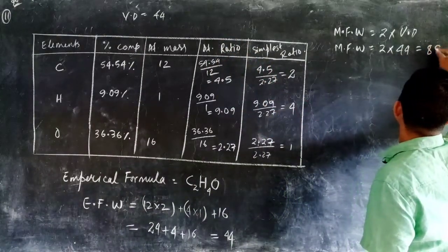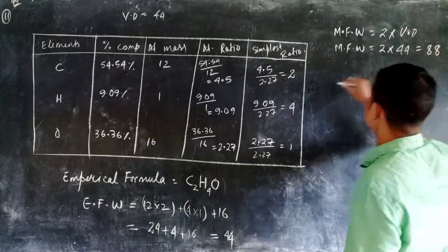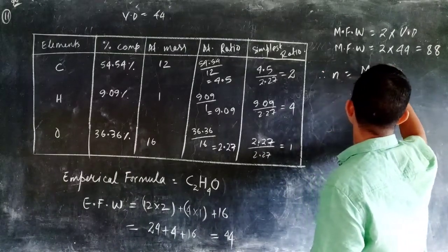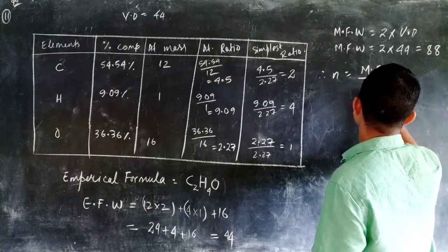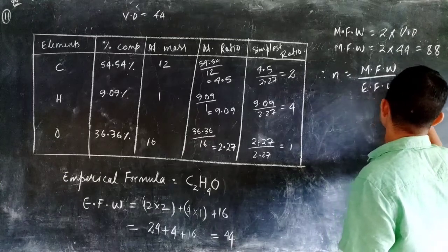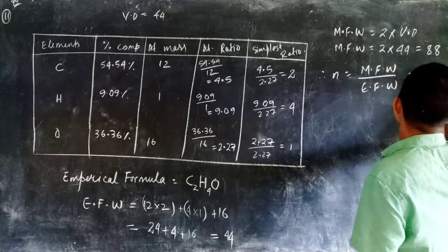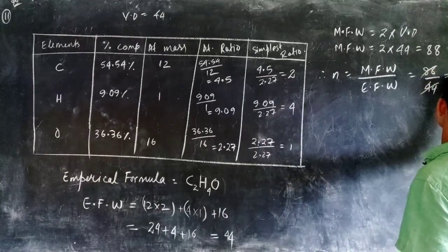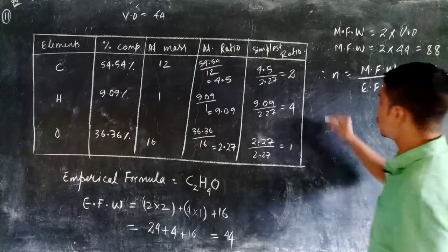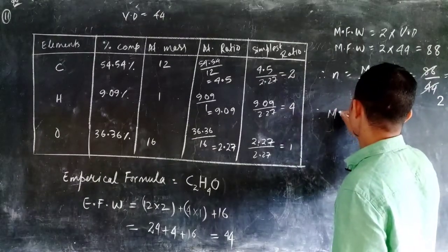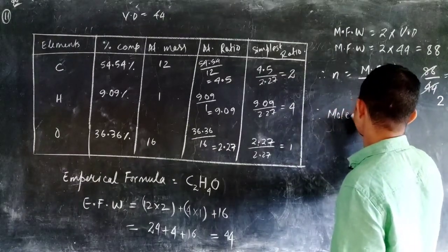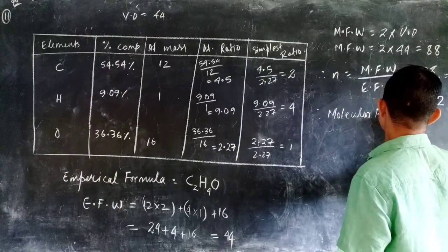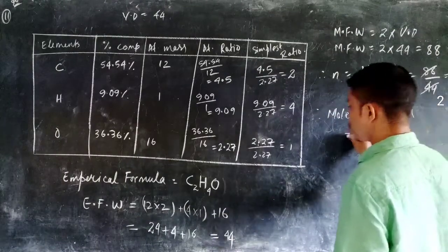So n equals molecular formula weight divided by empirical formula weight, which is 88 divided by 44, giving n equals 2. Therefore, the molecular formula is the empirical formula multiplied by 2.